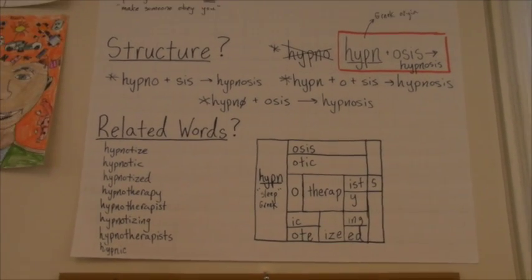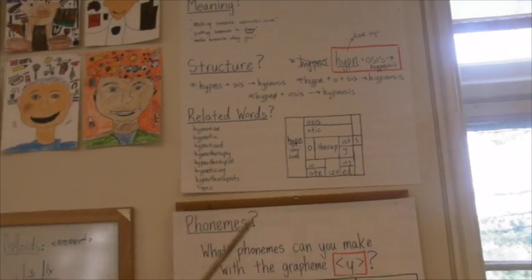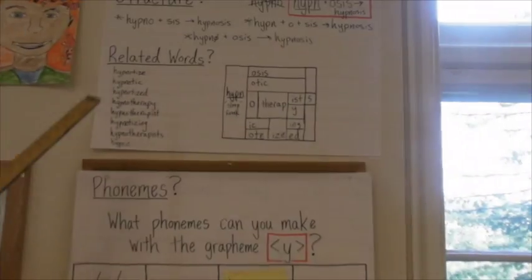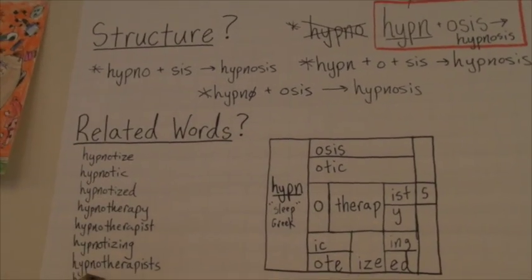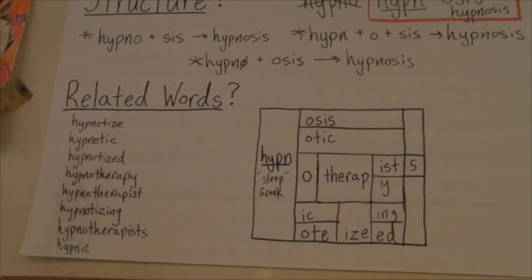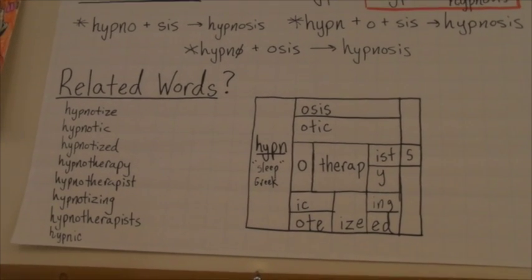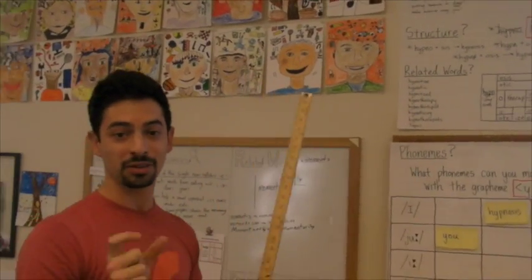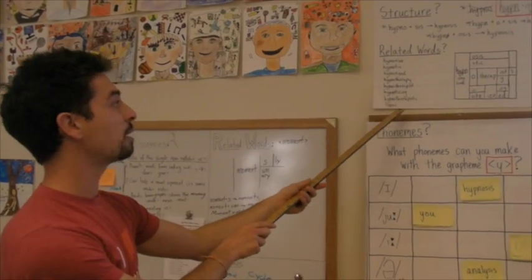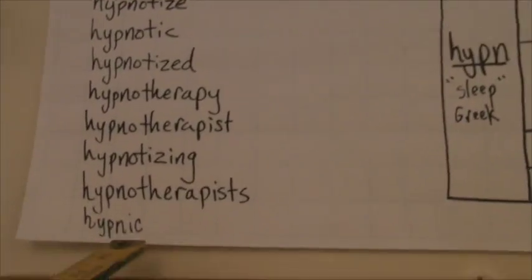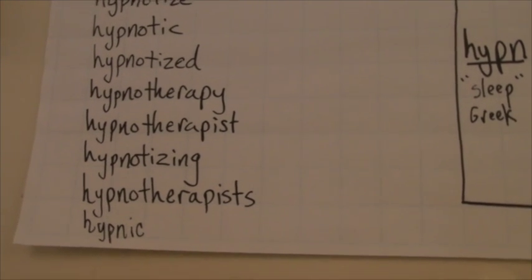So using the word searcher and the kid's own brainstorm, we were able to brainstorm some related words to this word. And by doing so, the kids were able to look at this list and their challenge from there was, can you hypothesize what the base would be using this list? And because they understand what a base is and that it has to have the same spelling structure within every single word that it's related to, they were able to get down to H-Y-P-N. Hypnic was the key word there because it was the first one that we found that did not have that O.